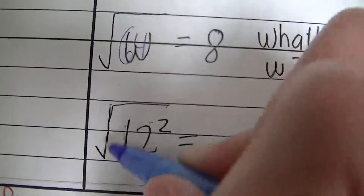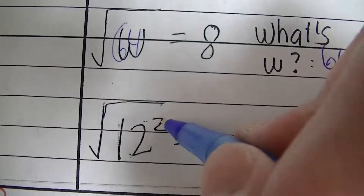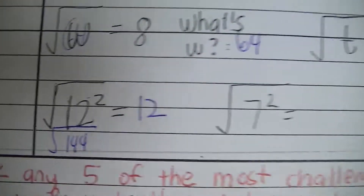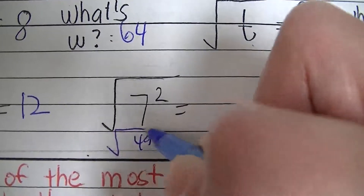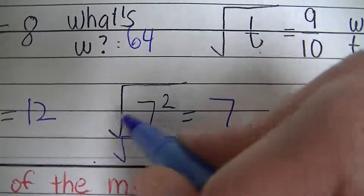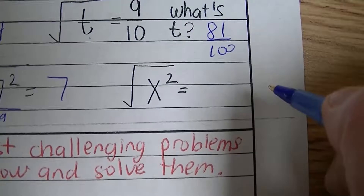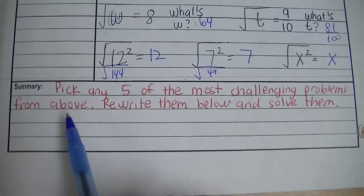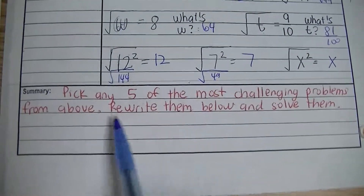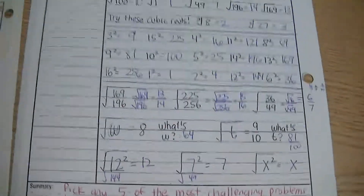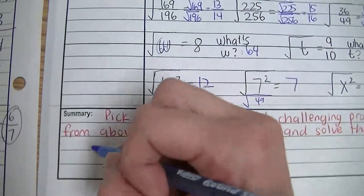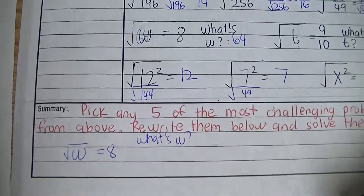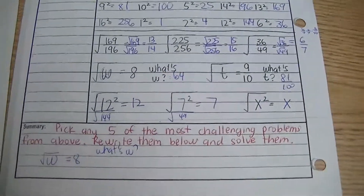These ones are really interesting. Remember, the radical symbol is a grouping symbol, so do what's inside first. 12 to the second power is 144, and the square root of 144 is 12. Try: 7 to the second power is 49, and the square root of 49 is 7. So 7 squared under a square root is 7. What do you think the answer to the square root of x squared is? Your answer would be x. For the summary, pick any five of the most challenging problems from above, rewrite them below, solve them, and circle the answer. Have a good day.